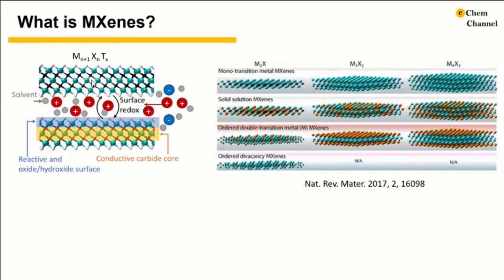So first, what is MXene? MXene is a large family of 2D transition metal carbide, nitride, or carbonitride. In a 2D flake of MXene, there are N+1 layers of early transition metal and N layers of carbon or nitrogen. The early transition metal layers are interleaved with layers of carbon and nitrogen. Both sides of an MXene flake are covered by surface groups such as O, OH, fluorine, or chlorine. Those surface terminations are bonded to the outer metal layers.